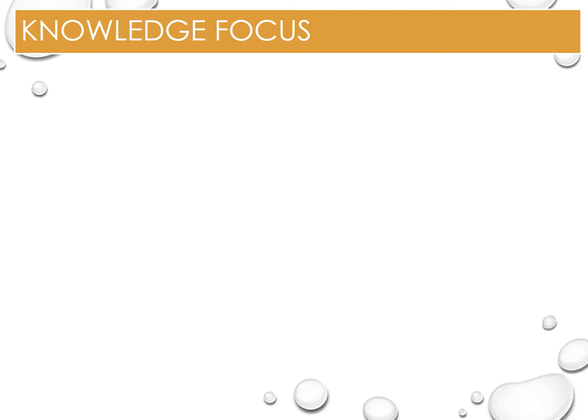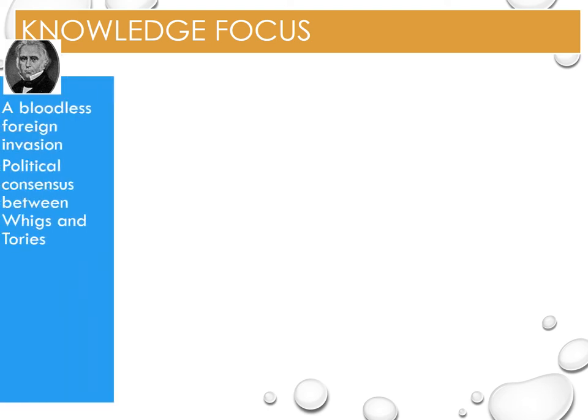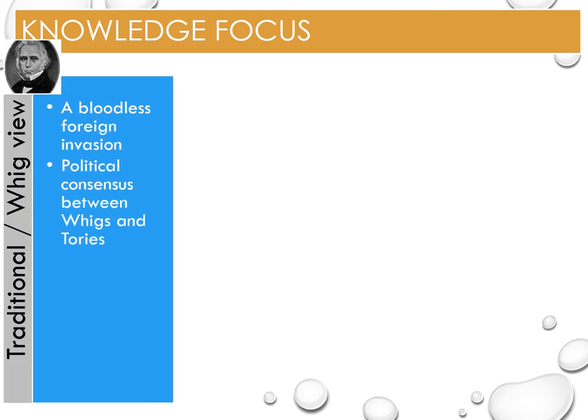Historical interpretations of the Glorious Revolution tend to focus on a number of key themes. Most traditional interpretations accept that it came about due to a foreign invasion and was not instigated by the native population of England. The traditionalist Thomas Macaulay, a 19th century historian, stated the revolution was bloodless and contrasted it with the French Revolution, concluding it was the least violent revolution in history. Macaulay also believed the revolution was a result of a moderate consensus between Whigs and Tories to overthrow the king.